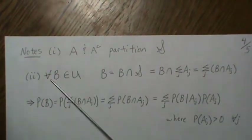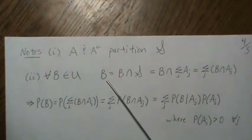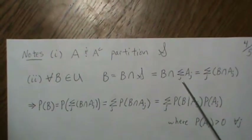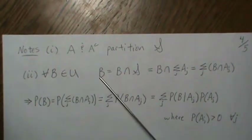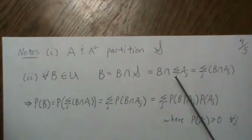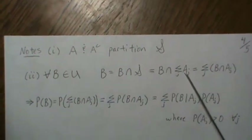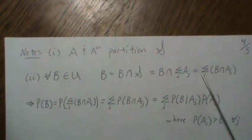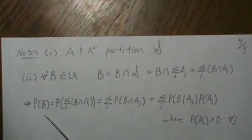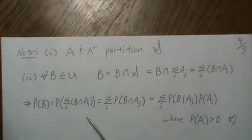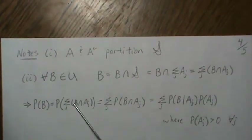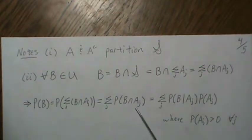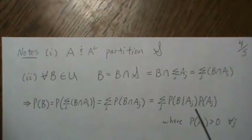For any B in the sigma field, B equals B intersect S, but we can replace S with our partition, giving B intersect the union of A_j. Intersection distributes over union, so B equals the union of (B ∩ A_j). Since each B ∩ A_j is disjoint and probability is sigma-additive, we can write P(B) as the sum of P(B ∩ A_j), which can be rewritten as the sum of P(B | A_j) · P(A_j).